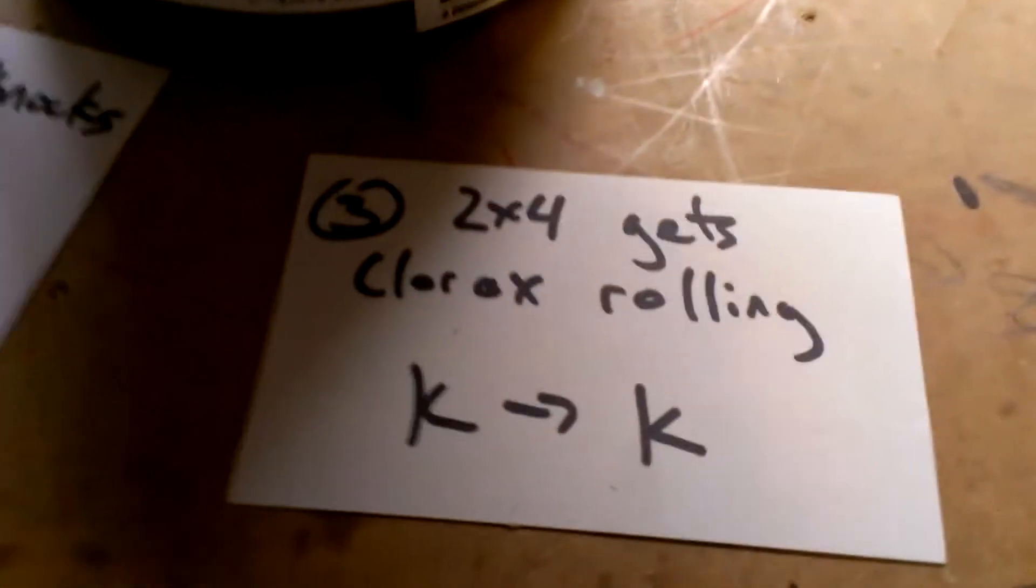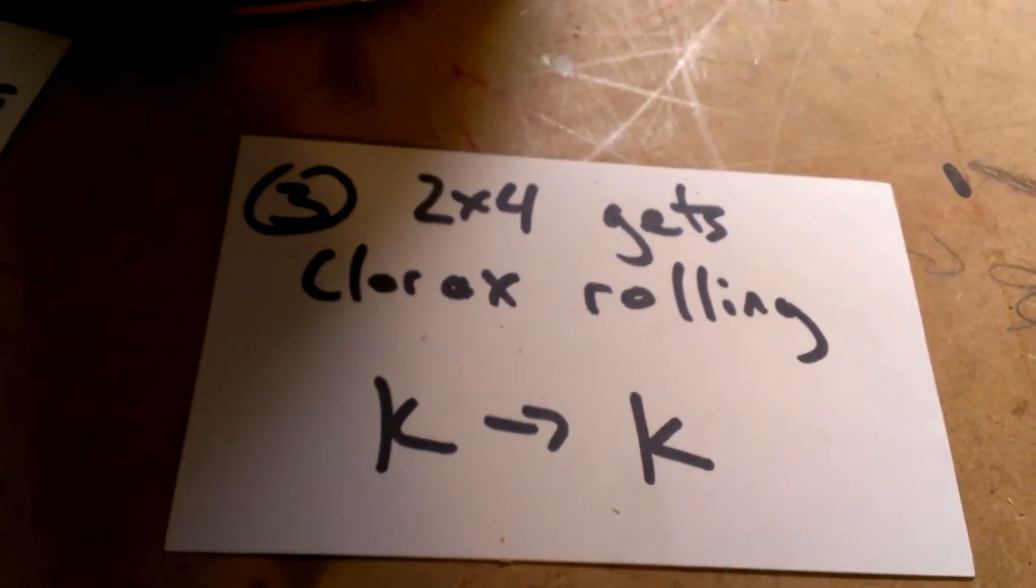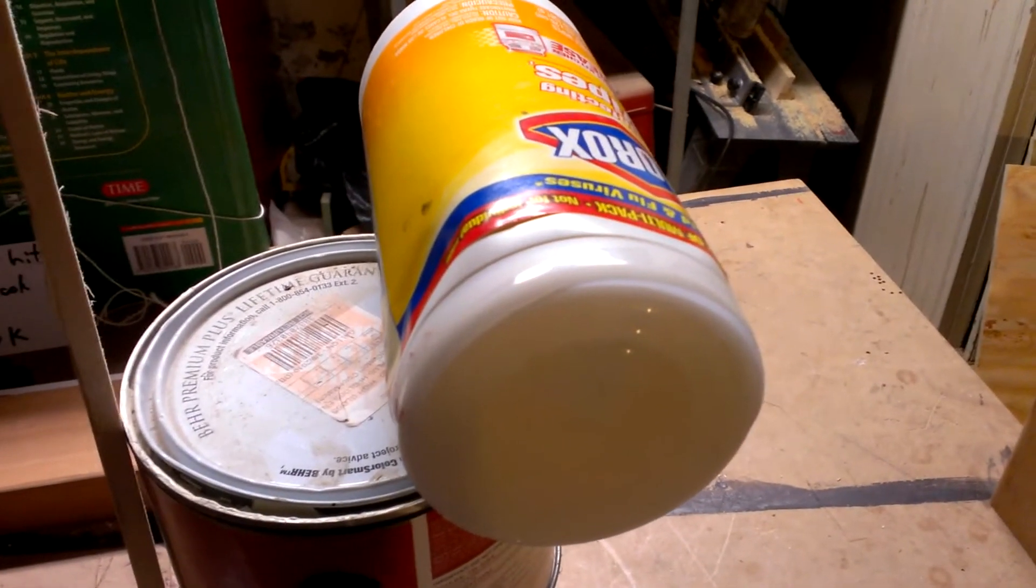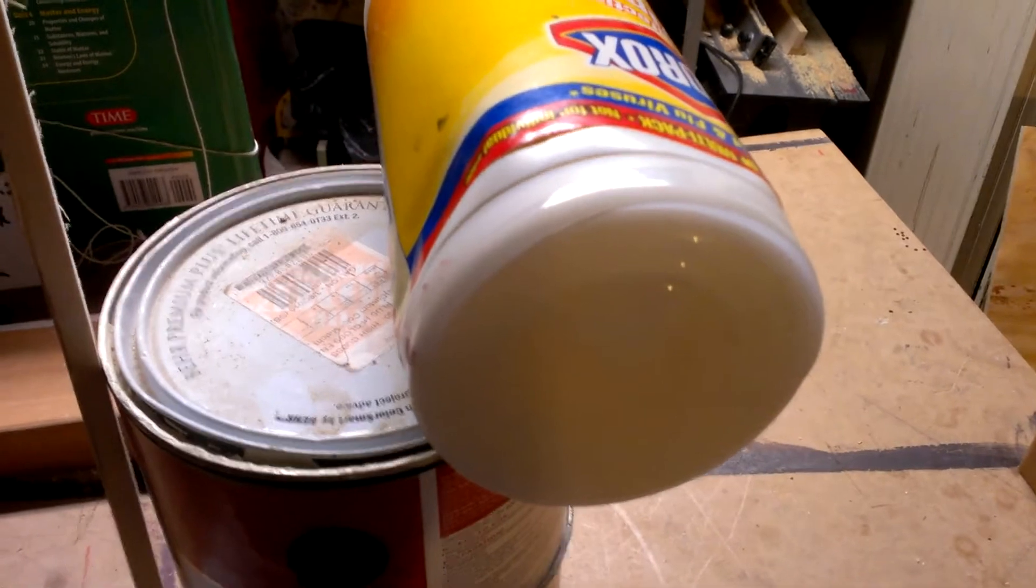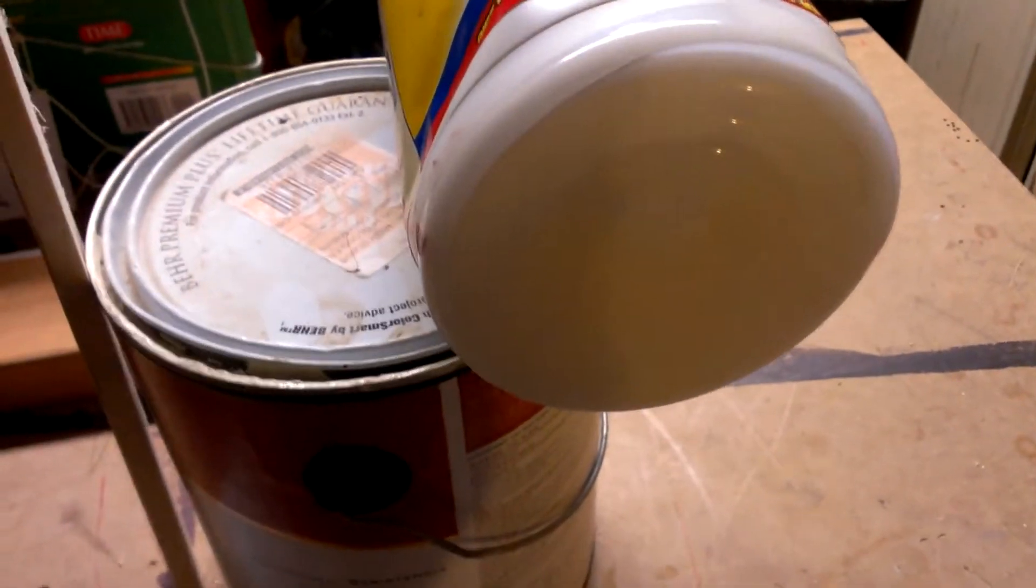As the 2x4 comes down, it is going to hit a tube of Clorox wipes. That will be a kinetic to kinetic energy transfer. This Clorox tube will be in motion. It'll get its kinetic energy from the 2x4 hitting it. So again, kinetic to kinetic.